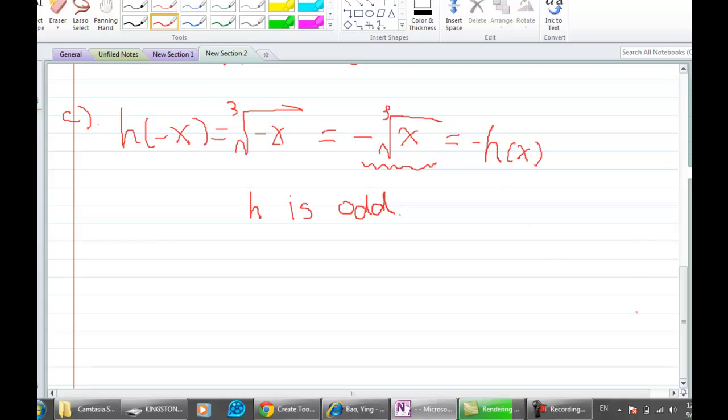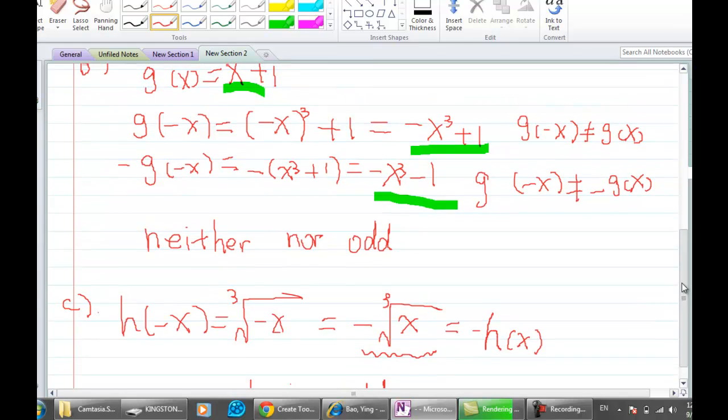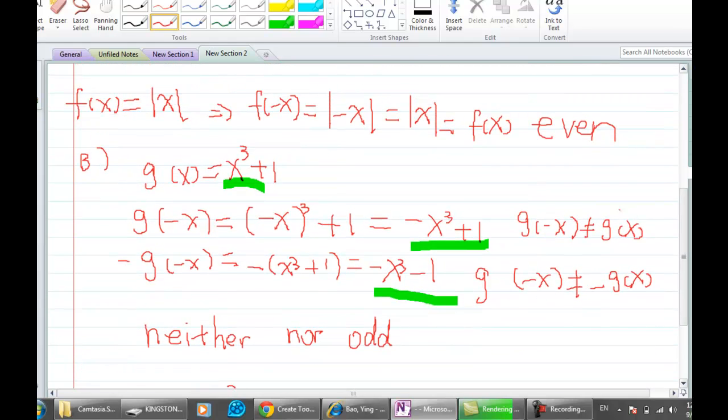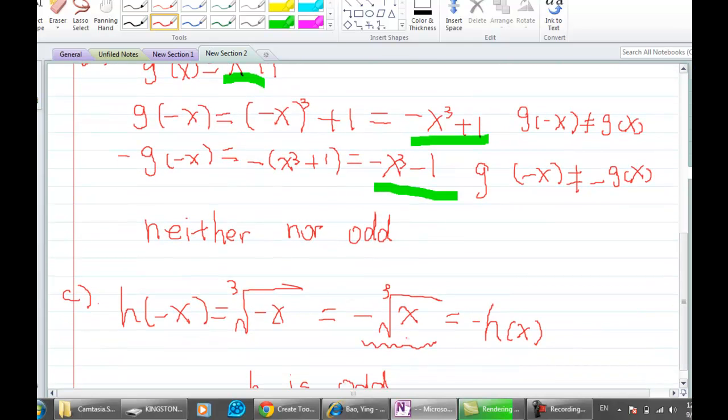So we now basically did three examples. We have an even function, we have a function that is neither even nor odd, and we have an odd function.